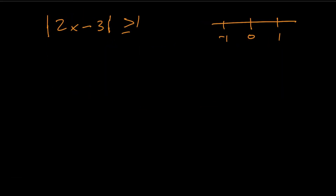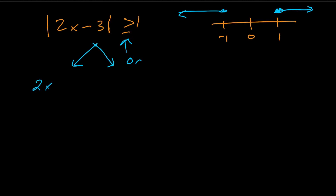Let's look at this example: the absolute value of 2x minus 3 is greater than or equal to 1. Since it's greater than or equal to, it's an 'or' type problem. The distance is greater than or equal to 1 unit from zero, so algebraically we split it into two inequalities: 2x minus 3 is greater than or equal to 1, or 2x minus 3 is less than or equal to negative 1.